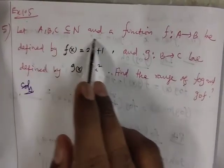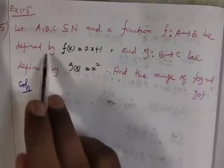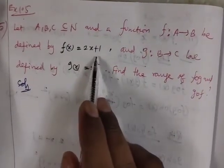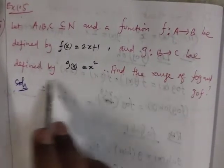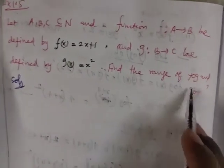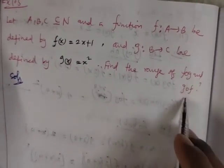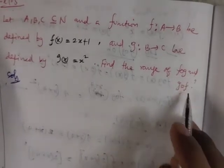Let A, B, C be subsets of N, and a function f from A to B be defined by f(x) = 2x+1, and g from B to C be defined by g(x) = x². Find the range of f composite g and g composite f.